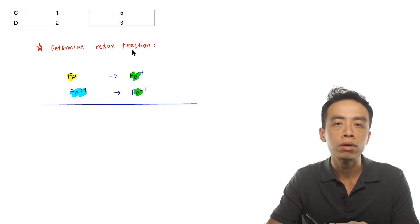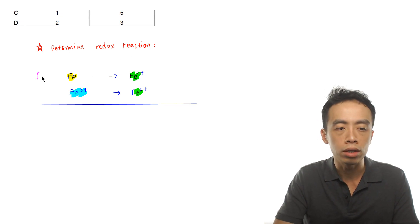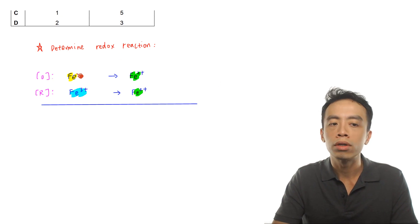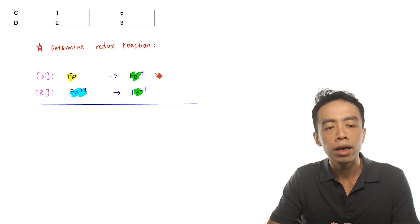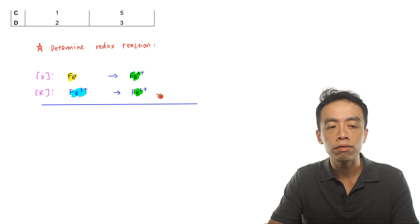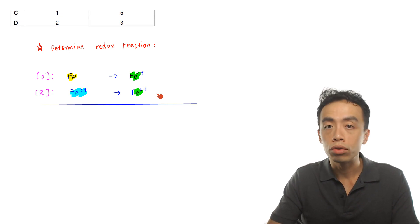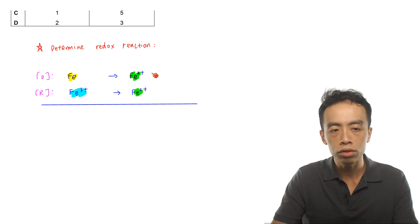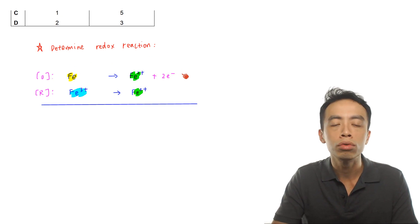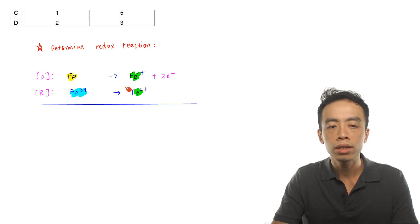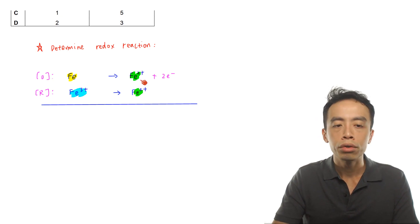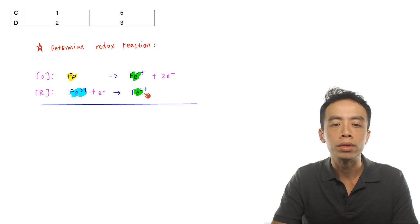Iron to iron 2+ is an oxidation because the oxidation state increases from 0 to +2. Iron 3+ to iron 2+ is a reduction because there is a decrease in oxidation state. Now we balance the two half equations. Iron is already balanced, so we just need to balance the charge. We need two electrons on the right-hand side for the oxidation half equation, making the left and right sides both neutral. For the reduction half equation, iron 3+ on the left gives iron 2+ on the right, so we need one electron on the left: Fe³⁺ + e⁻ → Fe²⁺.